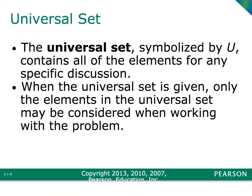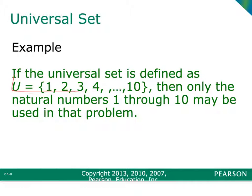Another definition you need is the universal set, which they often denote with a capital U. It represents the elements of the conversation — any discussion surrounding it has to be from the universal set. For example, if the universal set is male actors, you could list John Travolta, Tom Cruise, Orlando Bloom, but you would not be able to list Penelope Cruz because she is a female actress. Or if the universal set is the natural numbers 1 through 10, you would not be allowed to use the number 100 because it is outside the universal set.